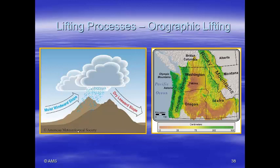Another lifting process relates to the shape of the Earth's surface — orographic lifting. Warm moist air coming off the Pacific Ocean moves inland, hits mountains, and is forced upward. The air expands and cools, clouds form, and it may rain. That air has now lost its moisture, resulting in a dry leeward slope. So we have a moist windward slope where clouds form and precipitation occurs, and a dry leeward slope on the other side.